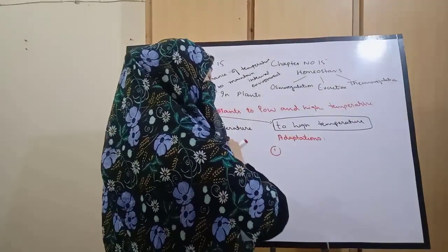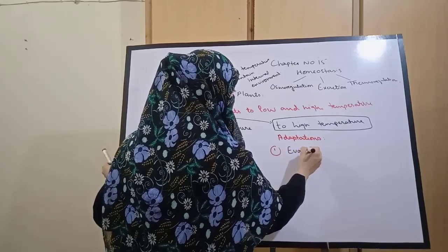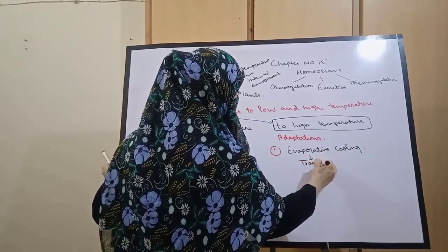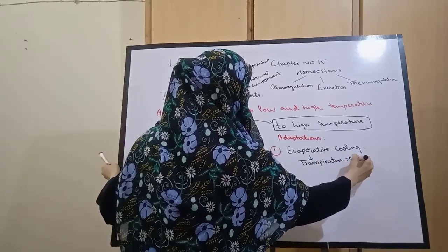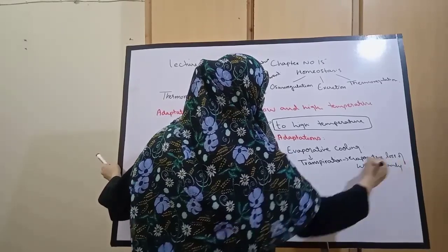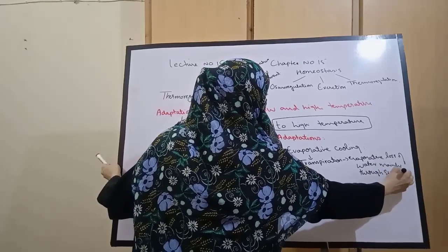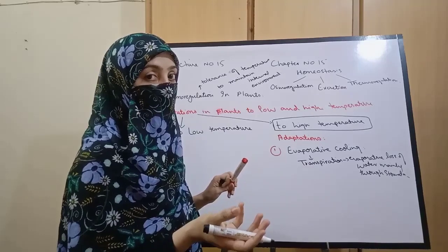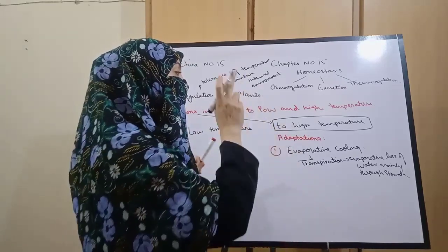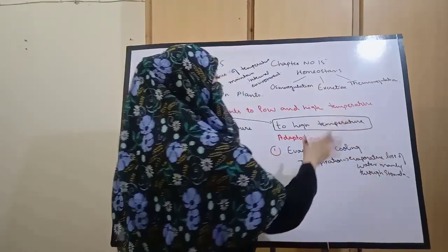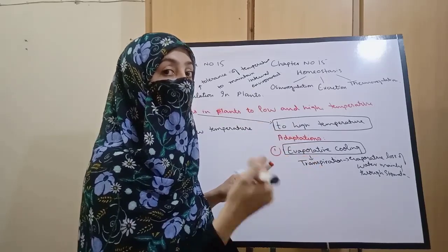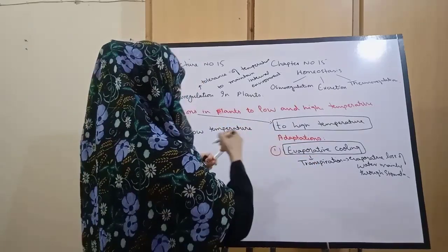The first strategy is evaporative cooling. Plants perform transpiration — transpiration is the evaporative loss of water, mainly through stomata. Although transpiration can also occur through lenticels (lenticular transpiration) and through the cuticle of leaves and young green stem (cuticular transpiration), most transpiration occurs through stomata. When evaporation happens, plants get a cooling effect — just like the sweating mechanism in humans where evaporative cooling is felt.